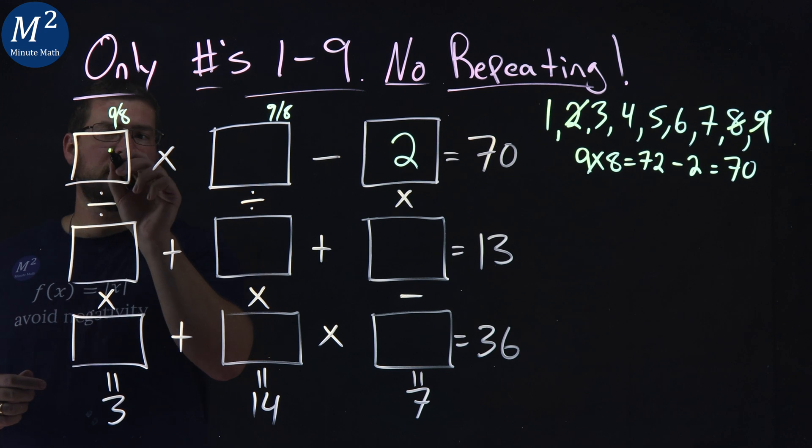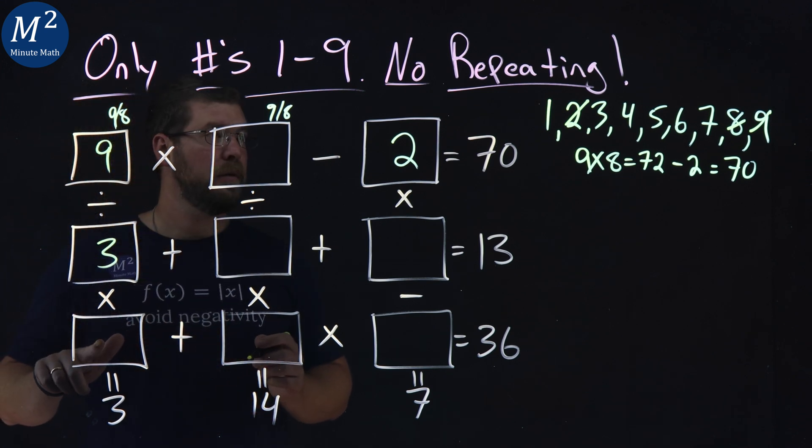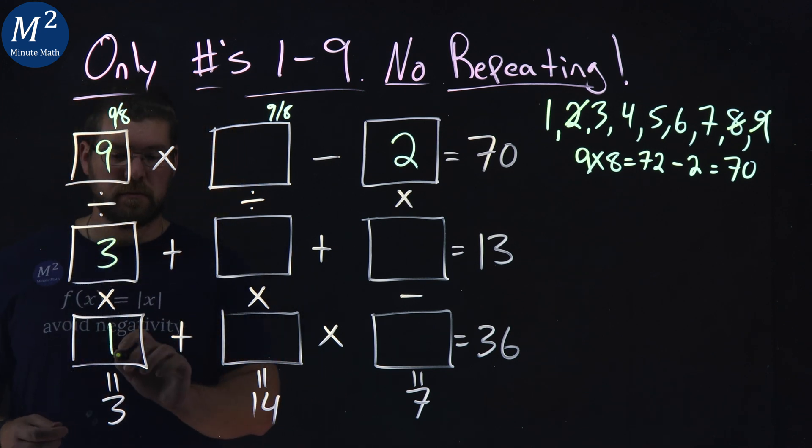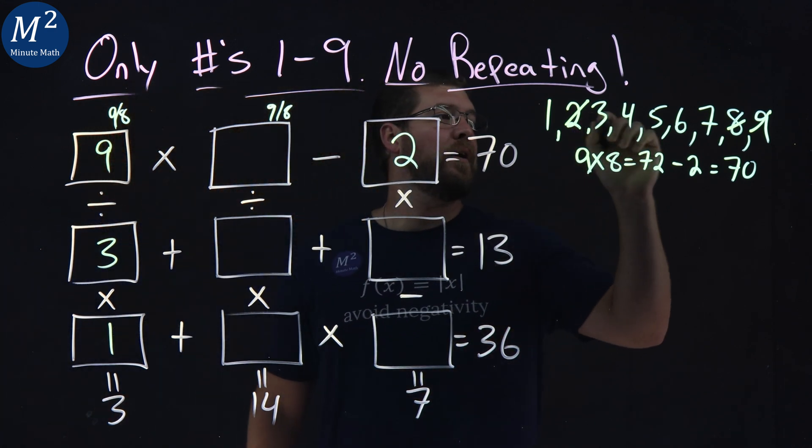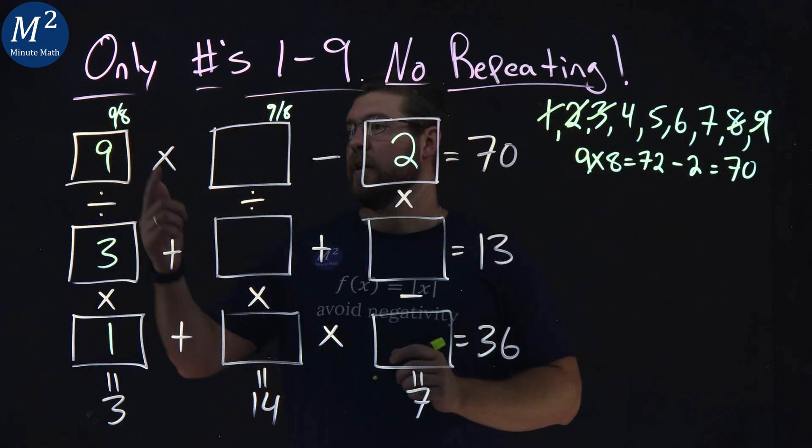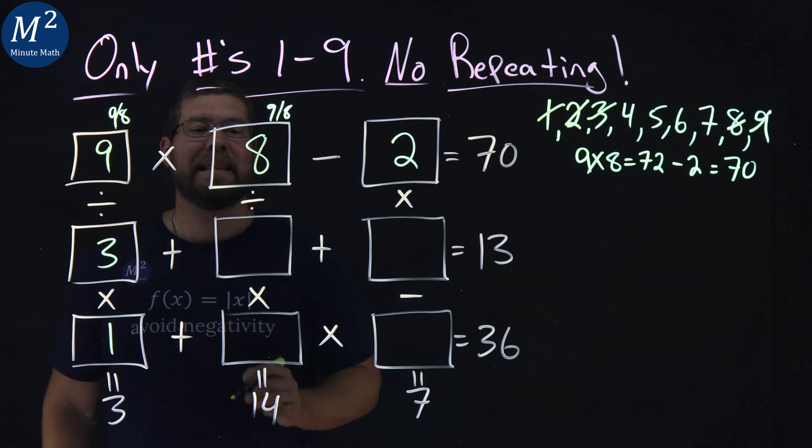Well, nine divided by a three gives me a three, that's available, times one gives me a three, so we have nine crossed off and three, so that's a nine, this one must be the eight.